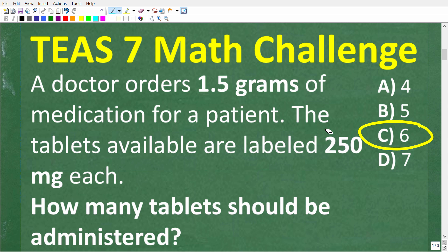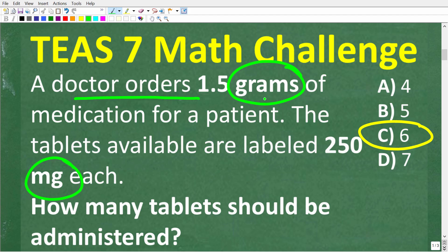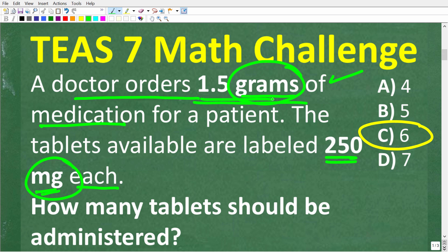What is the key to answering this question? The key is to understand that we're dealing with different units of measure — grams and milligrams. The doctor wants the patient to have 1.5 grams of medication, but you can only use tablets that are 250 milligrams each. We need to figure out how many tablets to give the patient to reach the 1.5 gram level. The correct answer is 6.